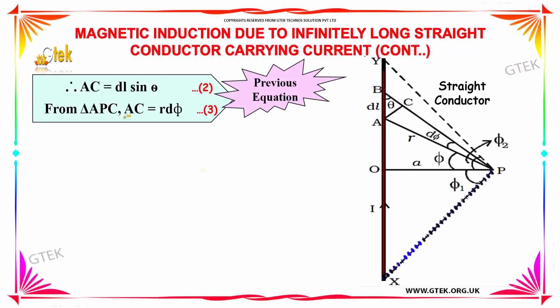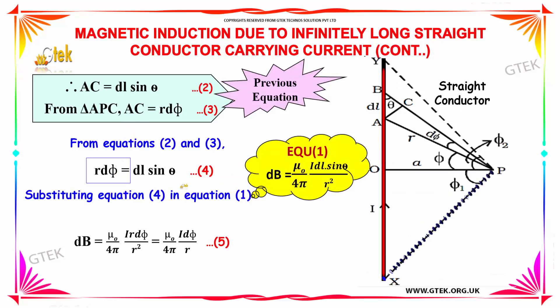Equating equations 2 and 3, you got r dpsi equals dl sin theta. Substituting dl sin theta with r dpsi in Biot-Savart law, you got mu0 into 4pi into I into r dpsi by r square. Tallying r and r square, you got mu0 into 4pi into I into dpsi by r.